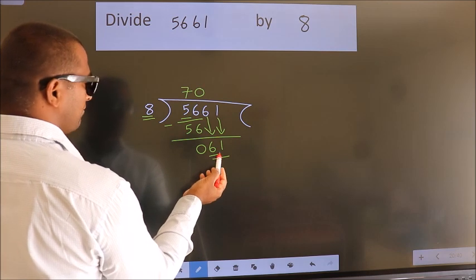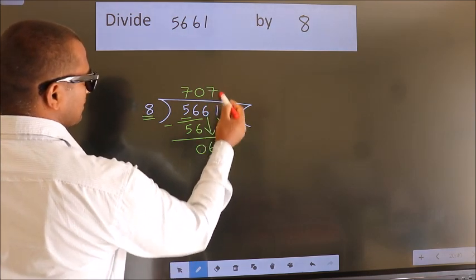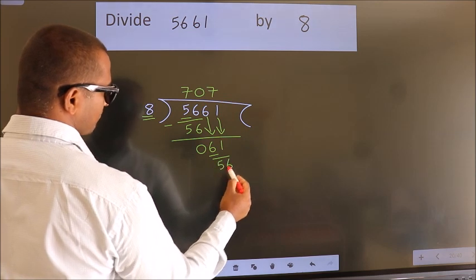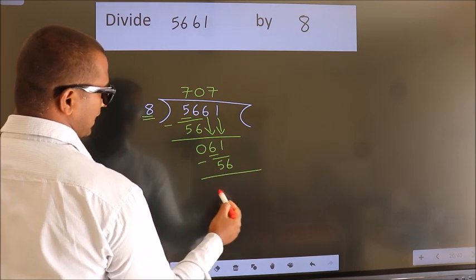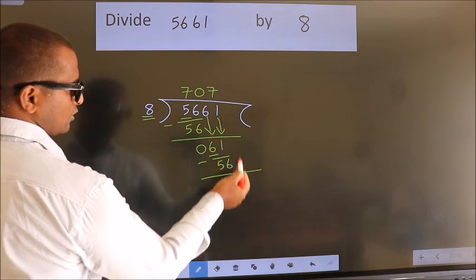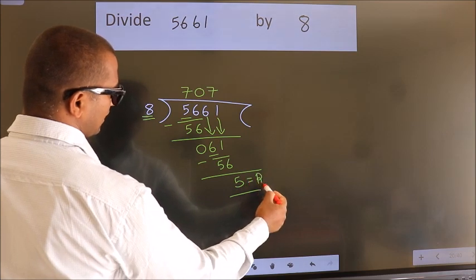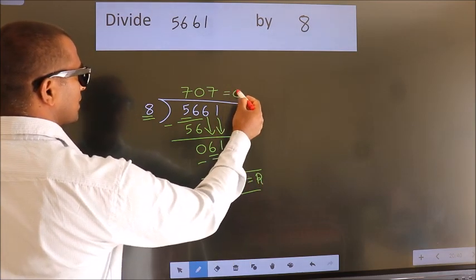A number close to 61 in the 8 table is 8 sevens, 56. Now we subtract. We get 5. No more numbers to bring down. So we stop here. This is our remainder. This is our quotient.